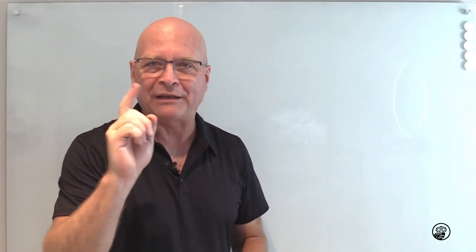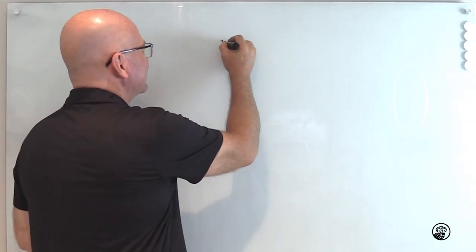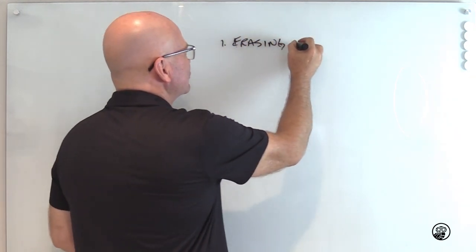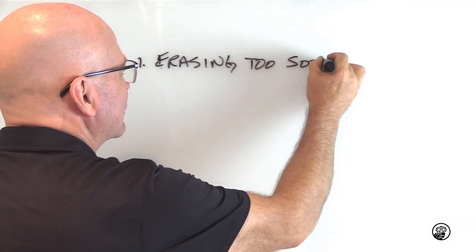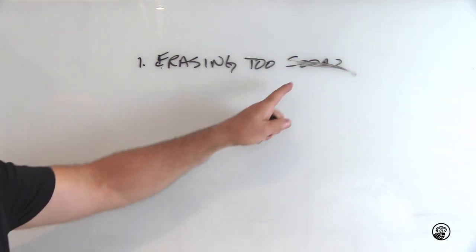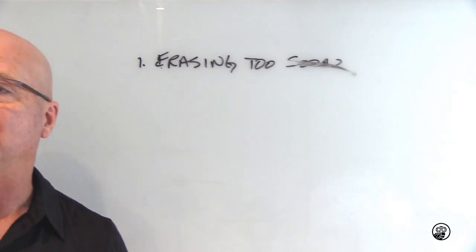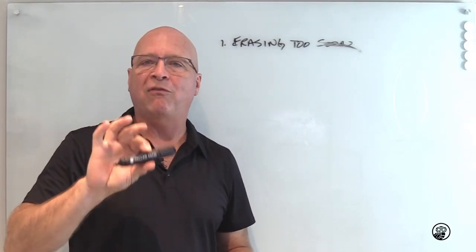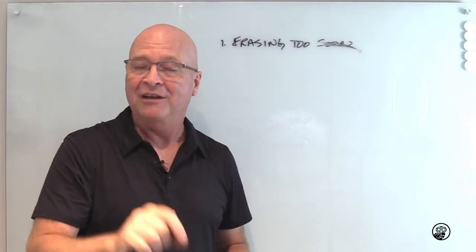Mistake number one: erasing too soon. See that? I used my finger and I tried to erase too soon. I made a big old smudge. That's because I didn't let the ink in the pen dry before I tried to erase it with my finger. I left a smudge.